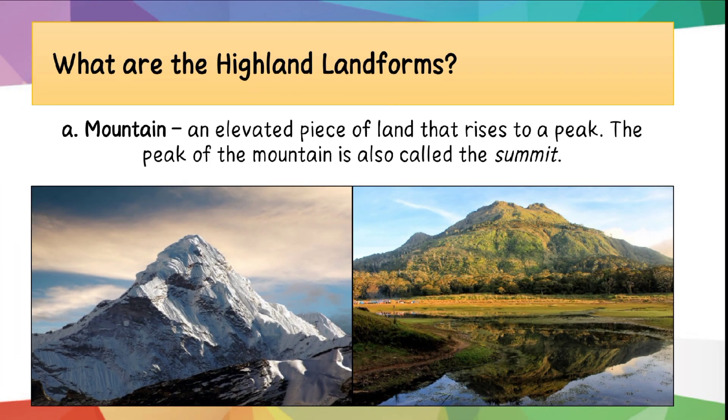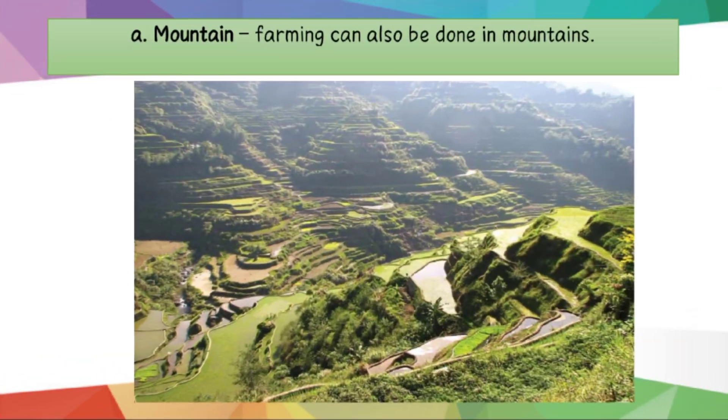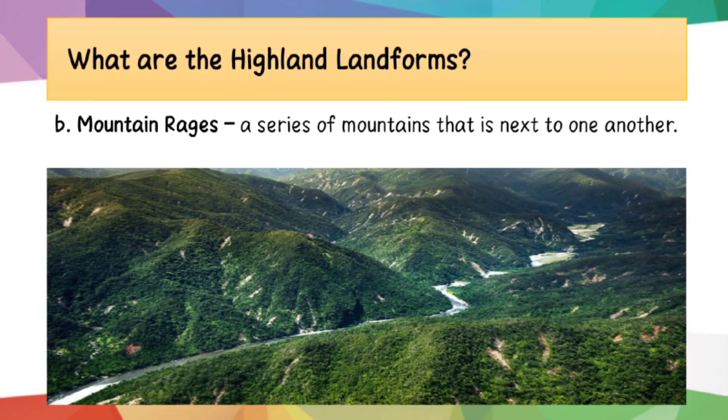What are the highland landforms? First, we have the mountain — an elevated piece of land that rises to a peak. The peak of the mountain is also called the summit. Here is a picture of a mountain. Farming can also be done in mountains.